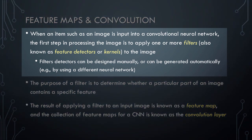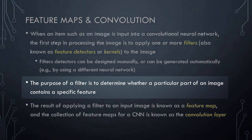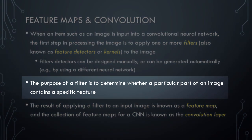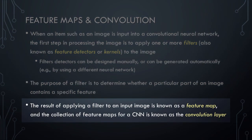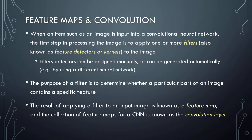When an image is input into a convolutional neural network, the first step is to apply one or more filters — also known as feature detectors or kernels — to the image. These filters can be designed manually or generated automatically, for example by using a different neural network. The purpose of a filter is to determine whether a particular part of an image contains a specific feature, such as lines, curves, or shapes. After applying a filter to an input image, the result is a feature map, and the collection of feature maps constitutes what is known as the convolution layer.